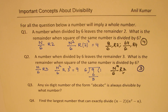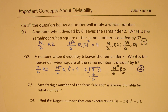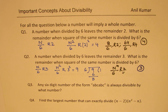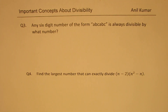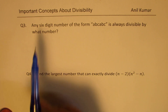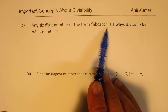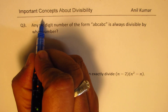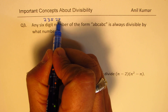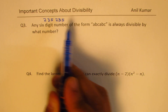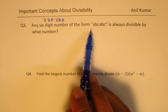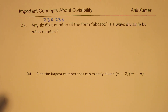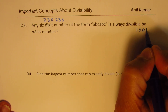Questions 3 and 4, let's take them on a separate page. Question number 3: any six-digit number of the form ABCABC — for example 235235 — is always divisible by what number? The answer is 1001.